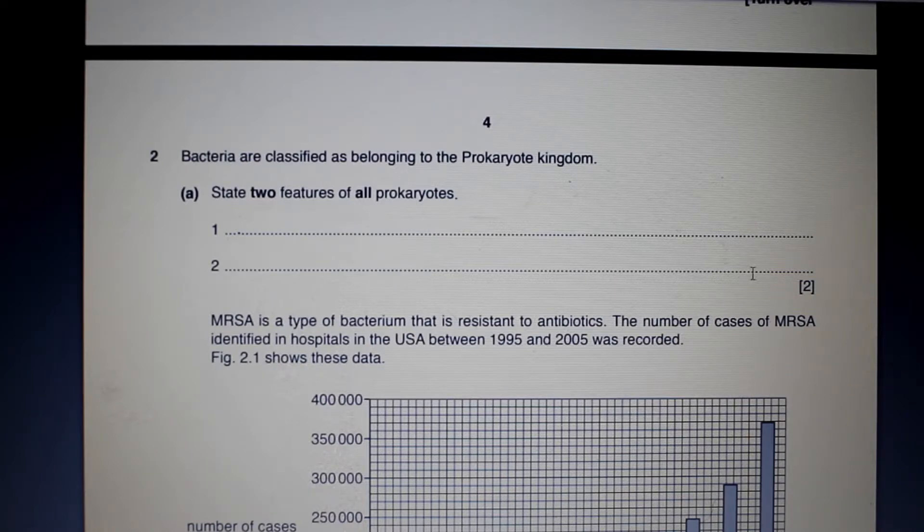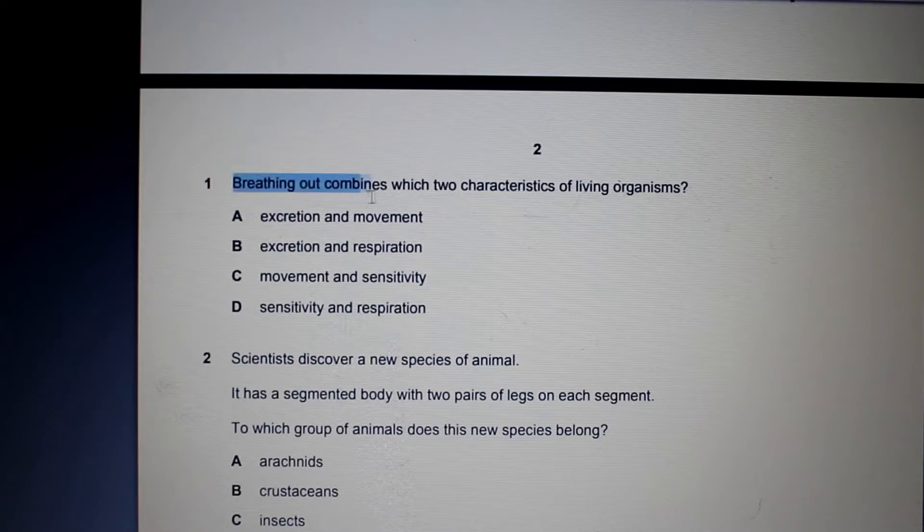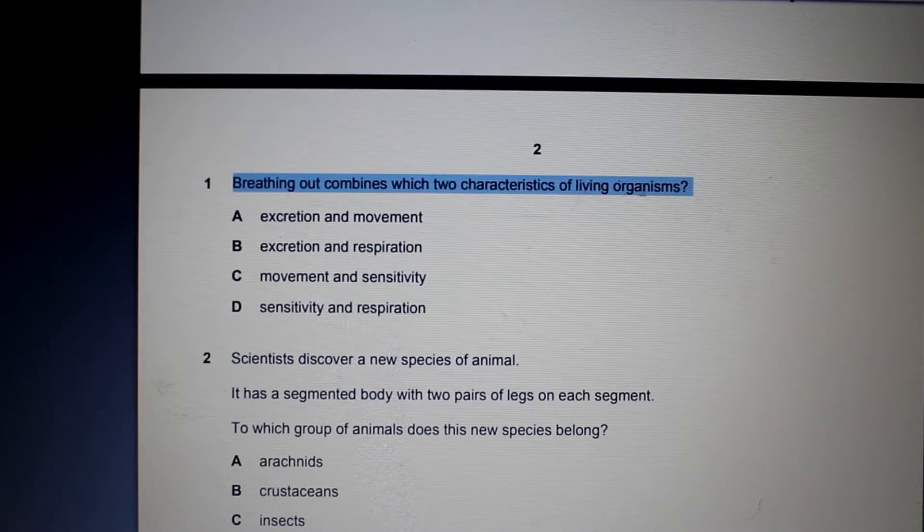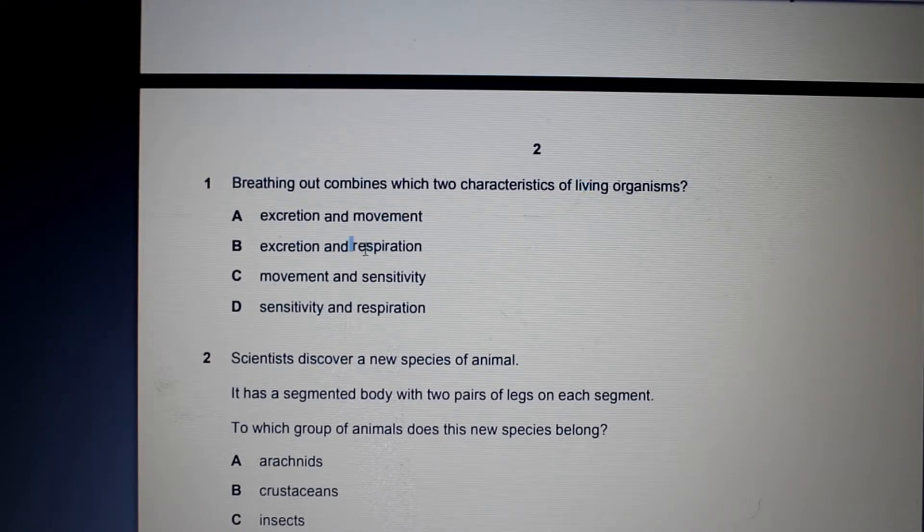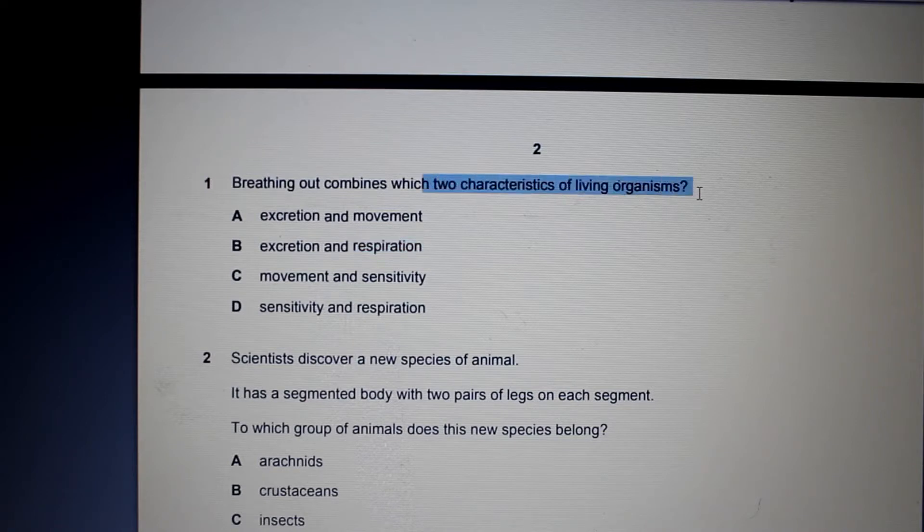Now we're asked breathing out combines which two characteristics of living organisms. Well breathing out first of all is excretion because you are breathing out carbon dioxide from your body. Now what other characteristics does breathing out entail? It involves movement. So you might think that because the question involves breathing that they're asking us about respiration. But don't be confused here. They're asking you about the two characteristics of breathing out. Whereas respiration is the process that involves breathing in, taking in oxygen, using that oxygen for the production of energy and then exhaling carbon dioxide. So respiration entails a whole process. And here they're simply asking us about two characteristics that all living organisms show.